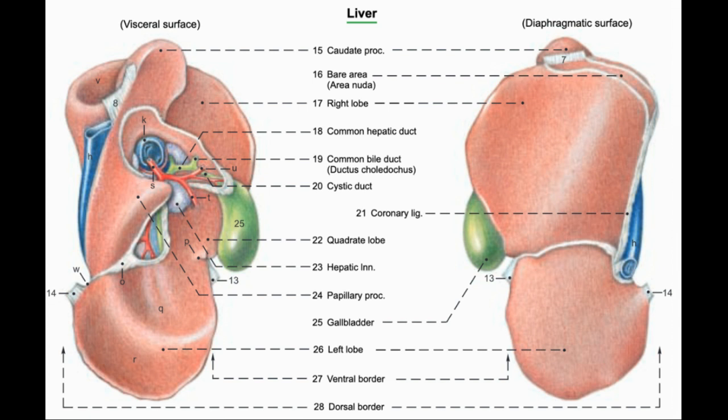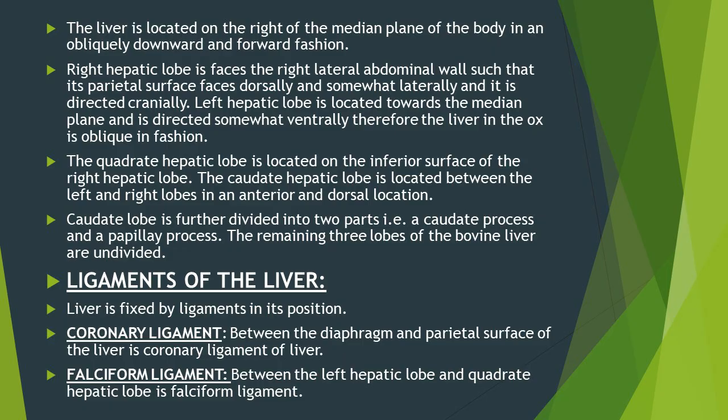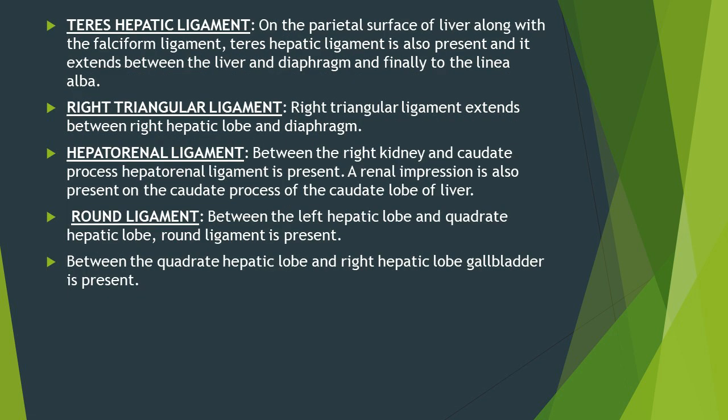Liver is fixed in its position by means of ligaments. The ligament present between the diaphragm and parietal surface of the liver is called the coronary ligament. A ligament is also present between the left hepatic lobe and quadrate hepatic lobe called the falciform ligament. On the parietal surface of the liver, along with the falciform ligament, there is the teres hepatic ligament, which extends between the liver and diaphragm and finally to the linea alba.